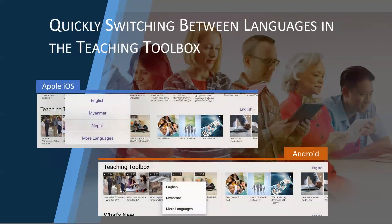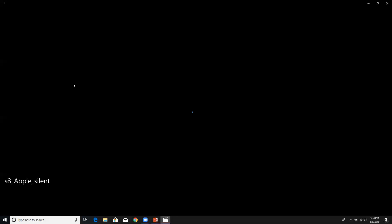So you're in the field and you've downloaded the JW Library app teaching toolbox in all the languages you think you need on your device. How do you efficiently switch between all those languages, particularly if you are uncertain what language the householder will actually speak? Let's see how we can do that with an Apple device.